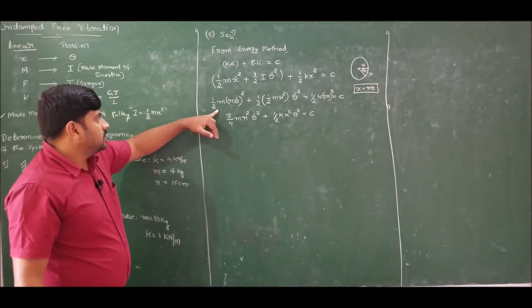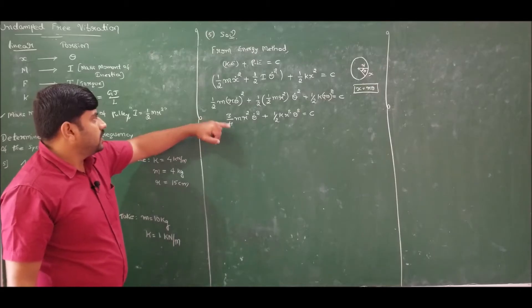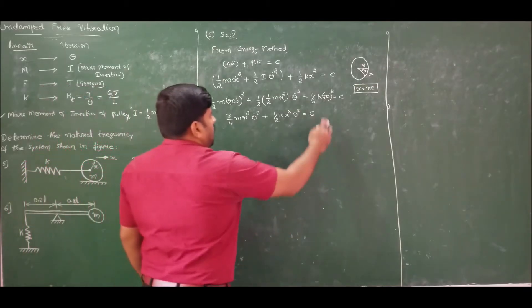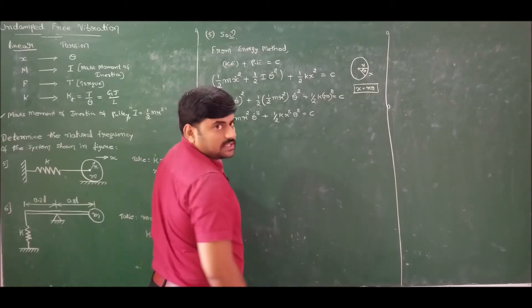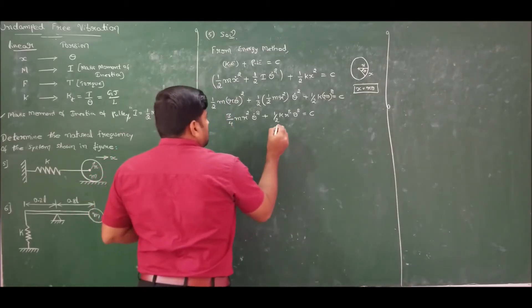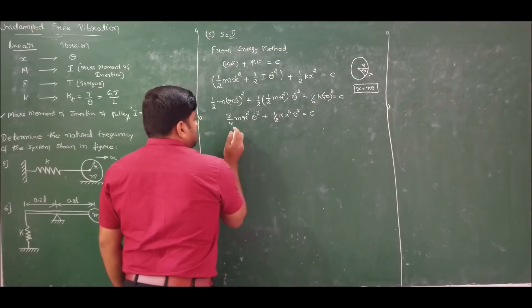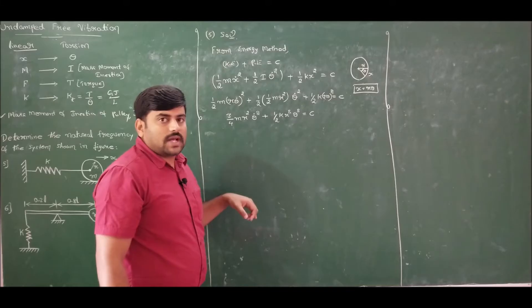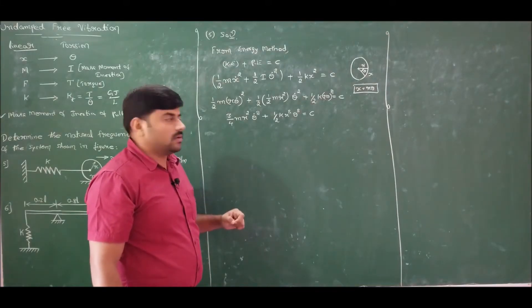The LCM is 4, and 2 plus 1 equals 3, giving 3/4 mv². The potential energy term is half kx², which becomes (1/2)k r² theta² = constant. Now I want to obtain the standard equation for natural frequency, which is x-double-dot + omega_n² x = 0.